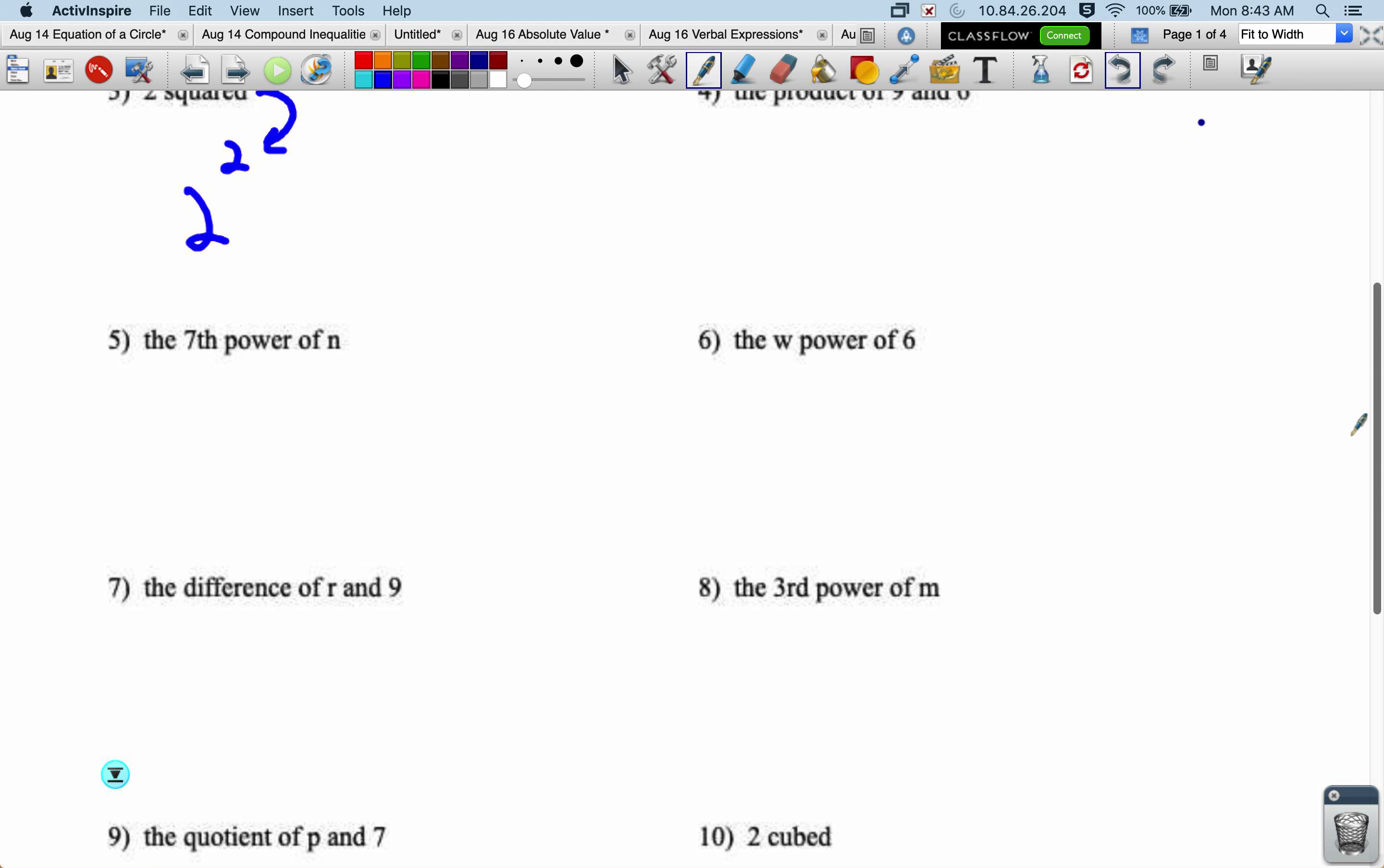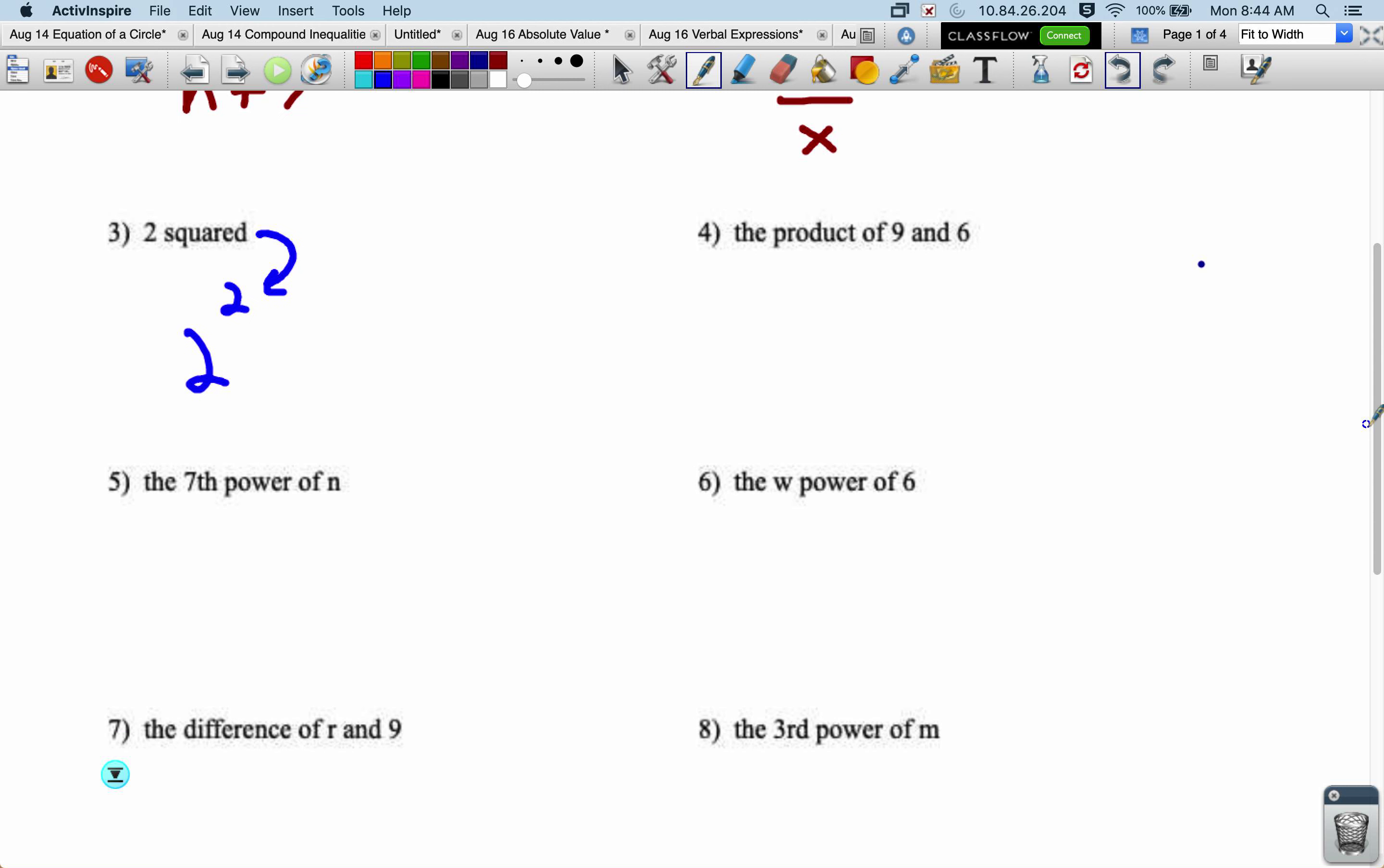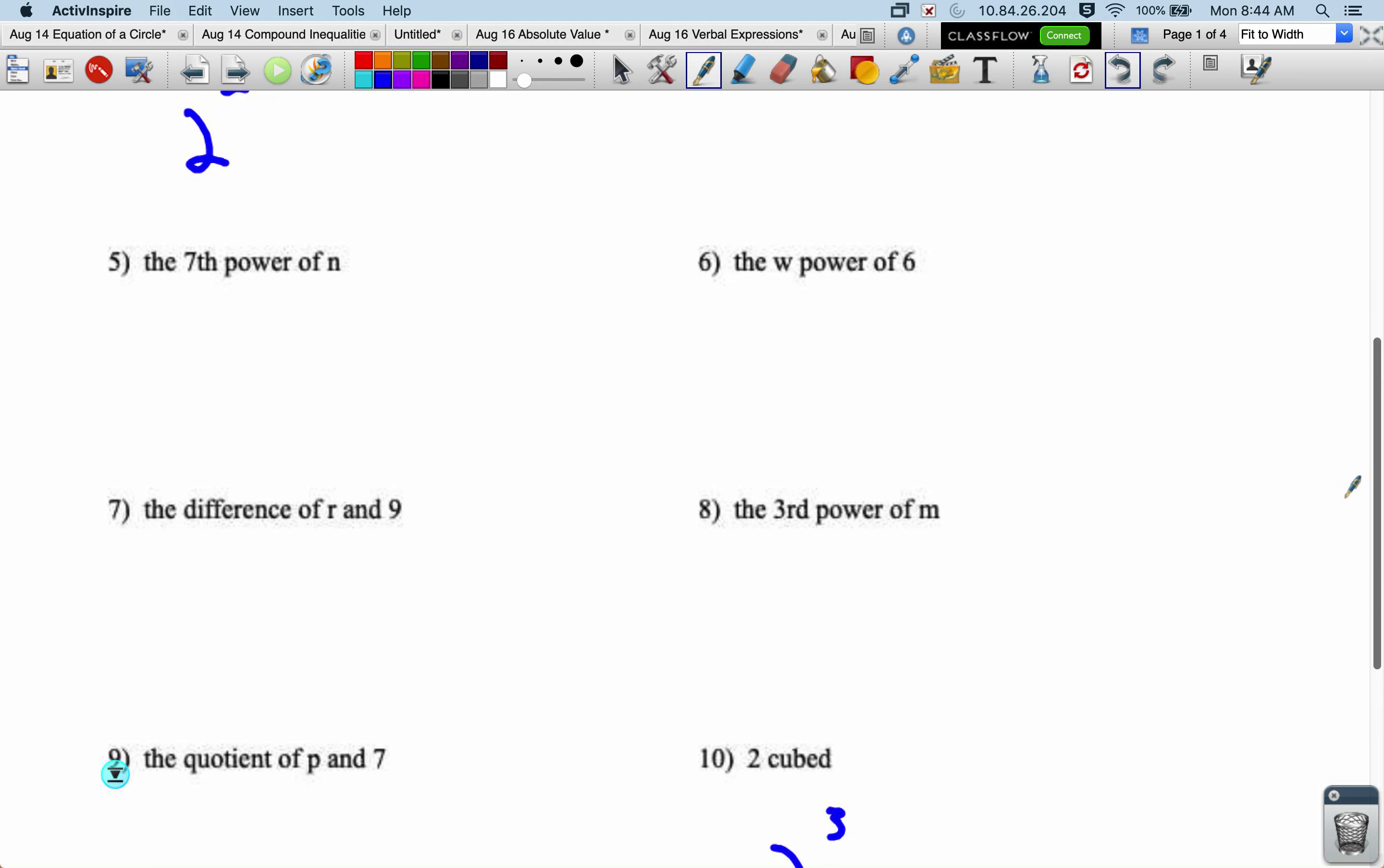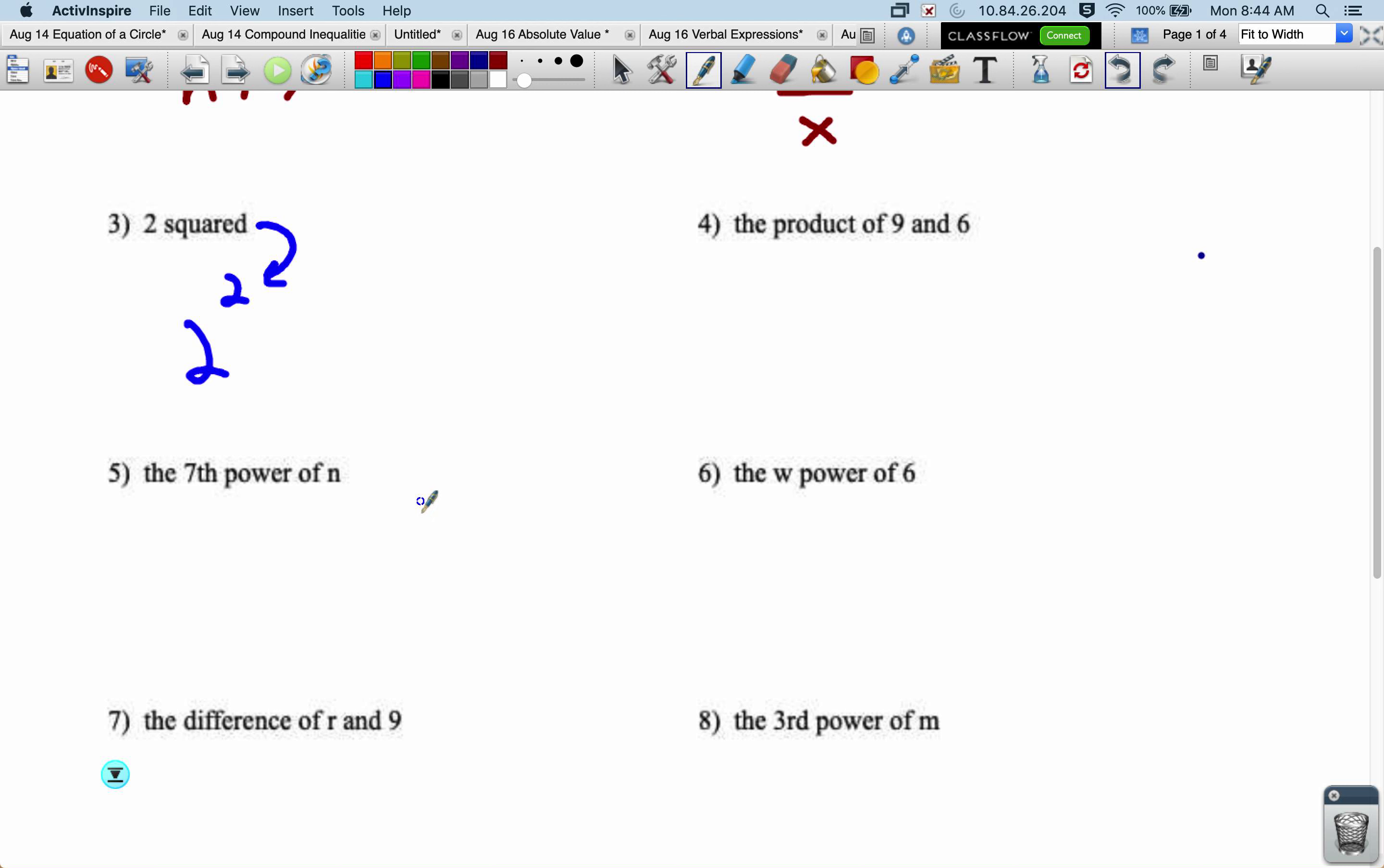And then we can just say, to the power of, if we want to do a different number. Let's see if we have anything like that. I don't see anything like that. And then the last option for an exponent is to say, the blank power of.